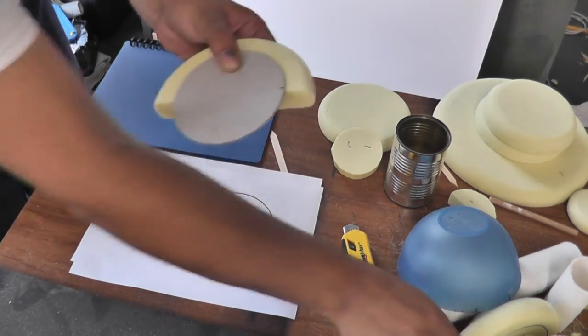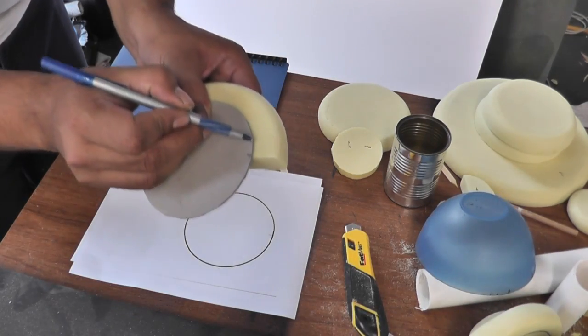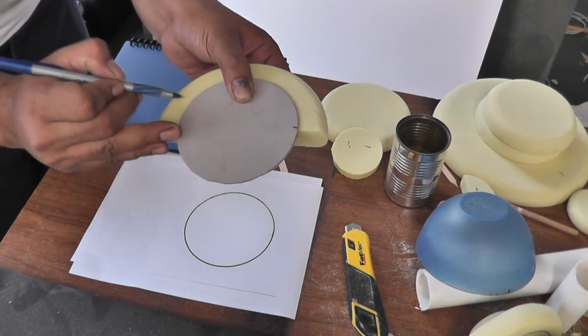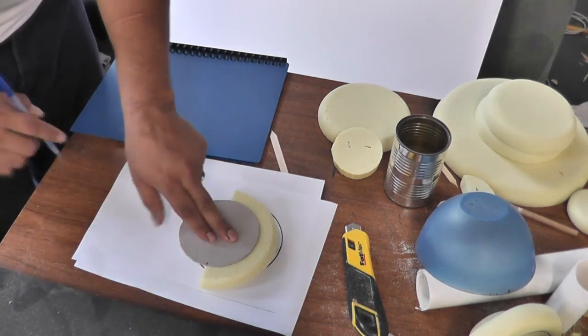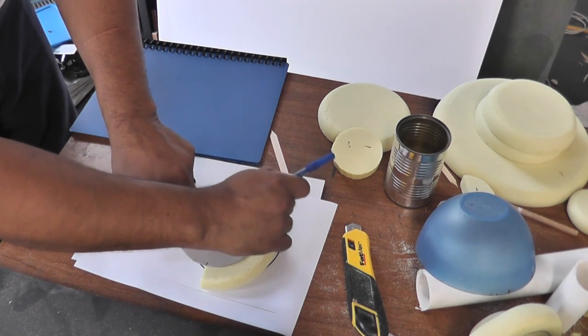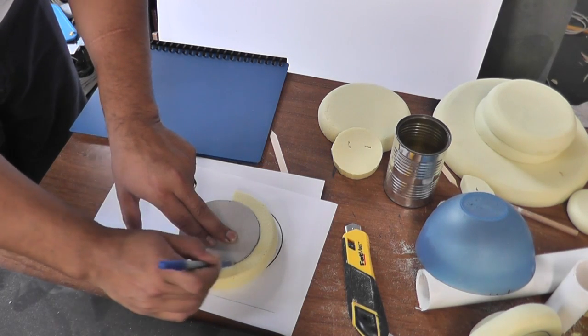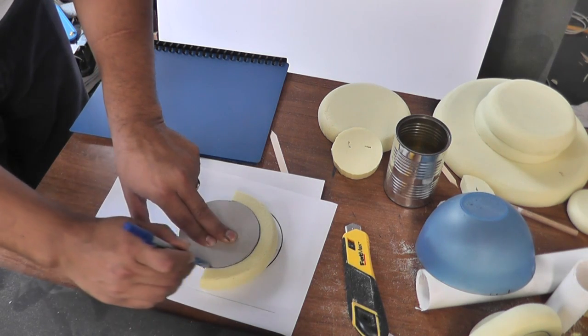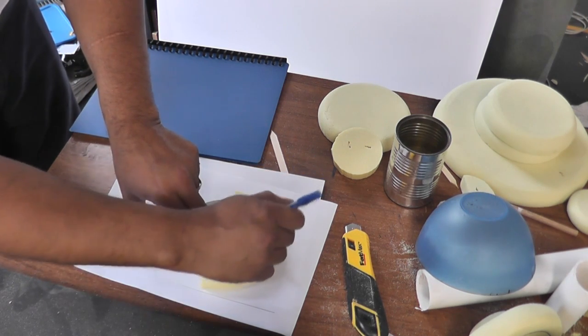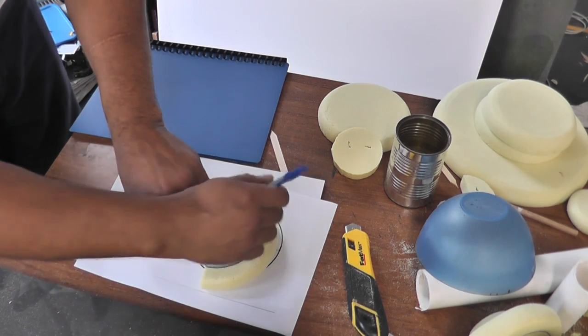And I just eyeball it, and the distance between here and the outside, and here and the outside is pretty much the same. And then on the table, I then just gently score around that line, just gently once, come back, do it again, and then three or four times and you'll get a nice deep line.